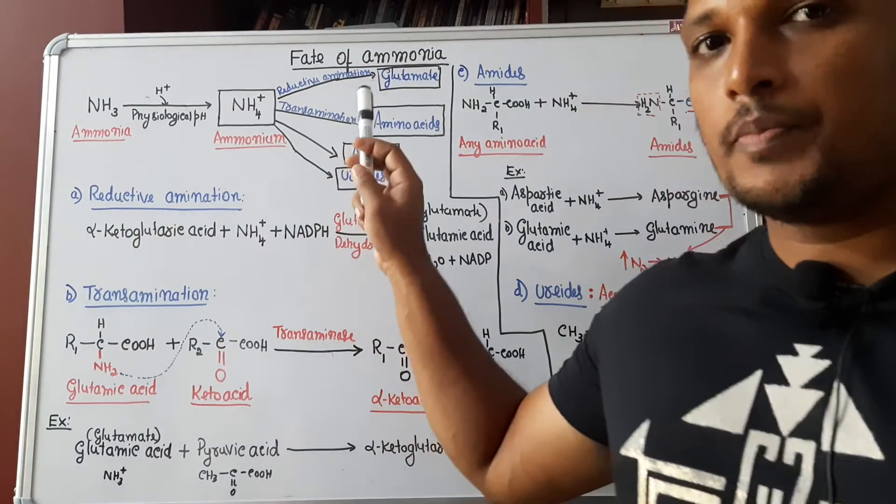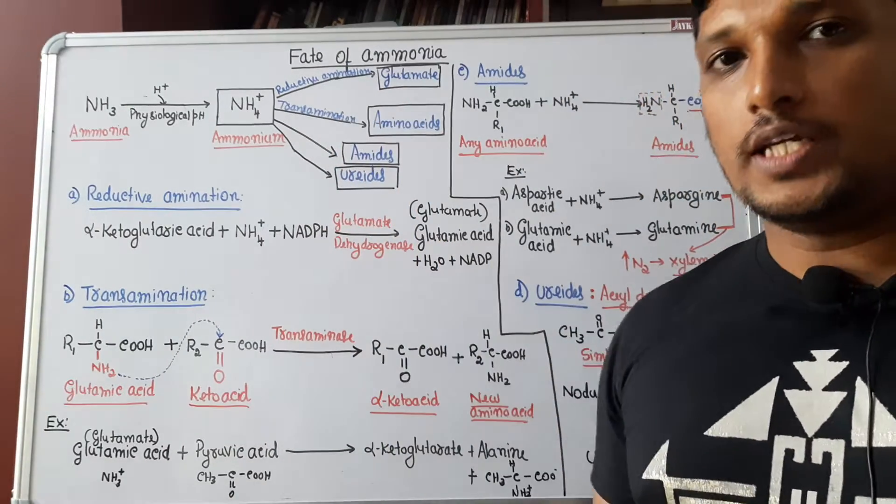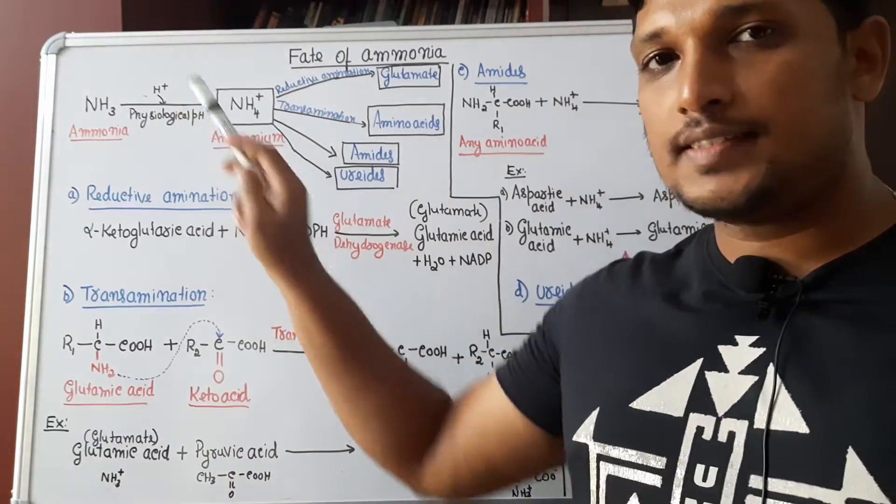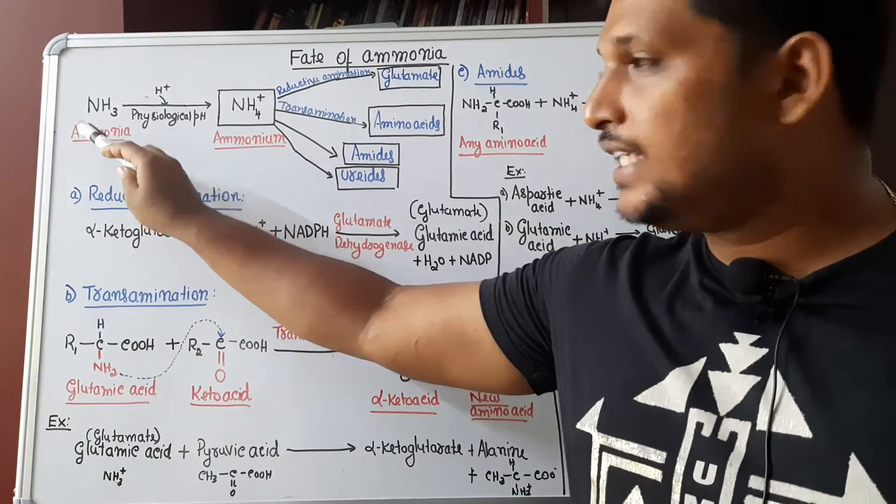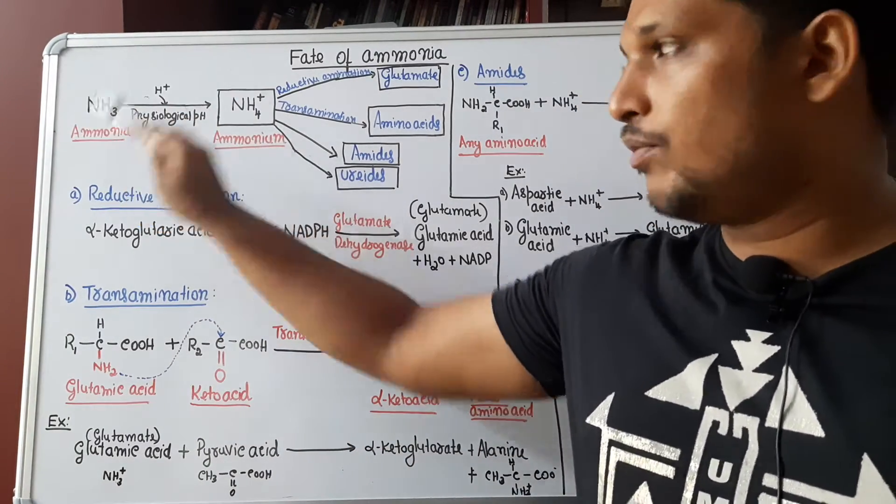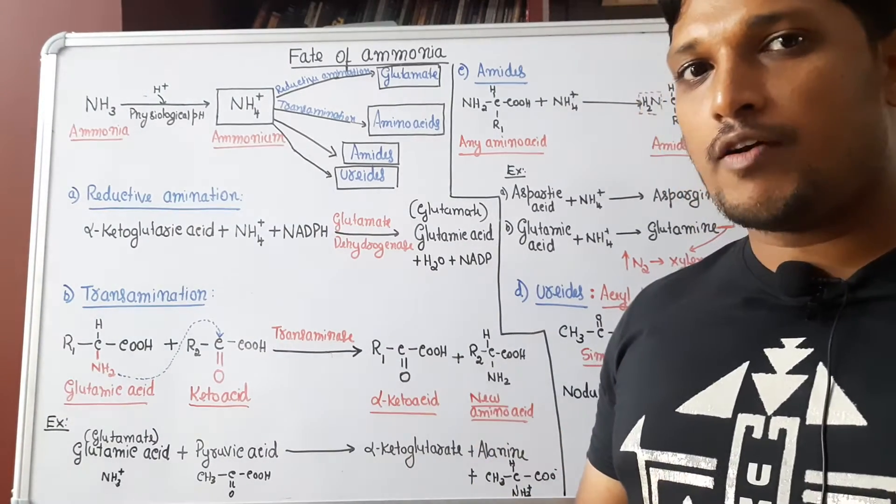Hello everyone, today's topic is fate of ammonia. During the nitrogen cycle, nitrogen is reduced to ammonia. Now in the plants, ammonia is formed.